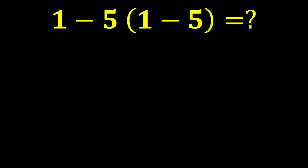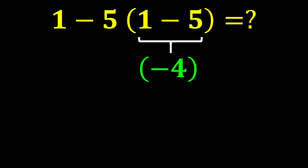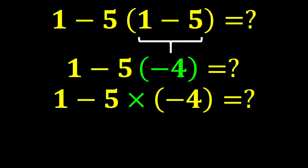The expression is 1 minus 5 times (1 minus 5). According to PEMDAS, we first calculate what is inside the parentheses: 1 minus 5 gives us negative 4, so the expression becomes 1 minus 5 times negative 4. In mathematics, when a number is written next to a parenthesis, it means the number is multiplied by the expression inside — sometimes the multiplication sign is omitted for simplicity.